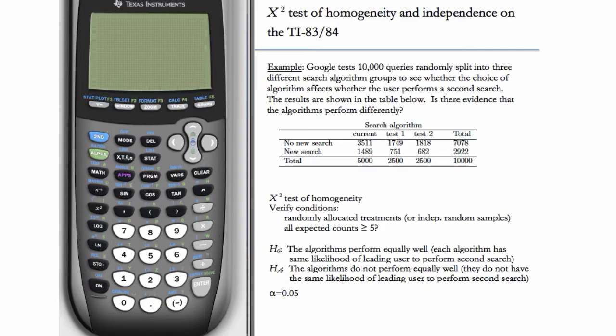We'll start with this example. We have Google tests 10,000 queries, randomly split into three different search algorithm groups, to see whether the choice of algorithm affects whether the user performs a second search. The results are shown in the table below.